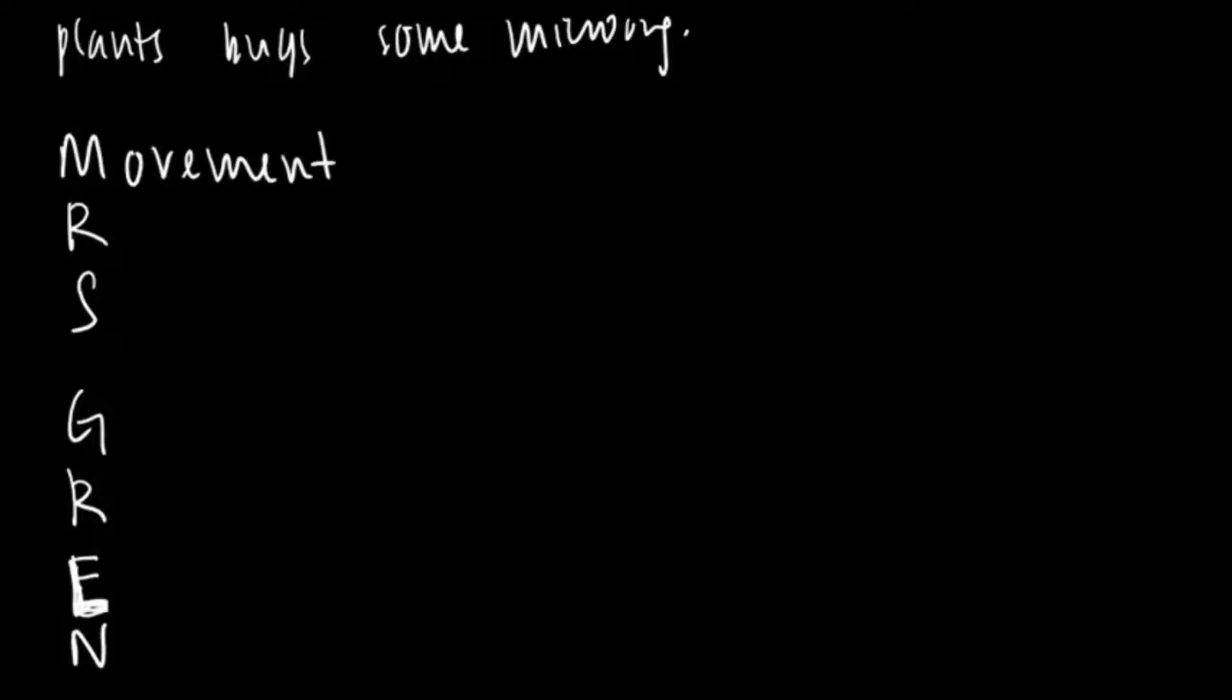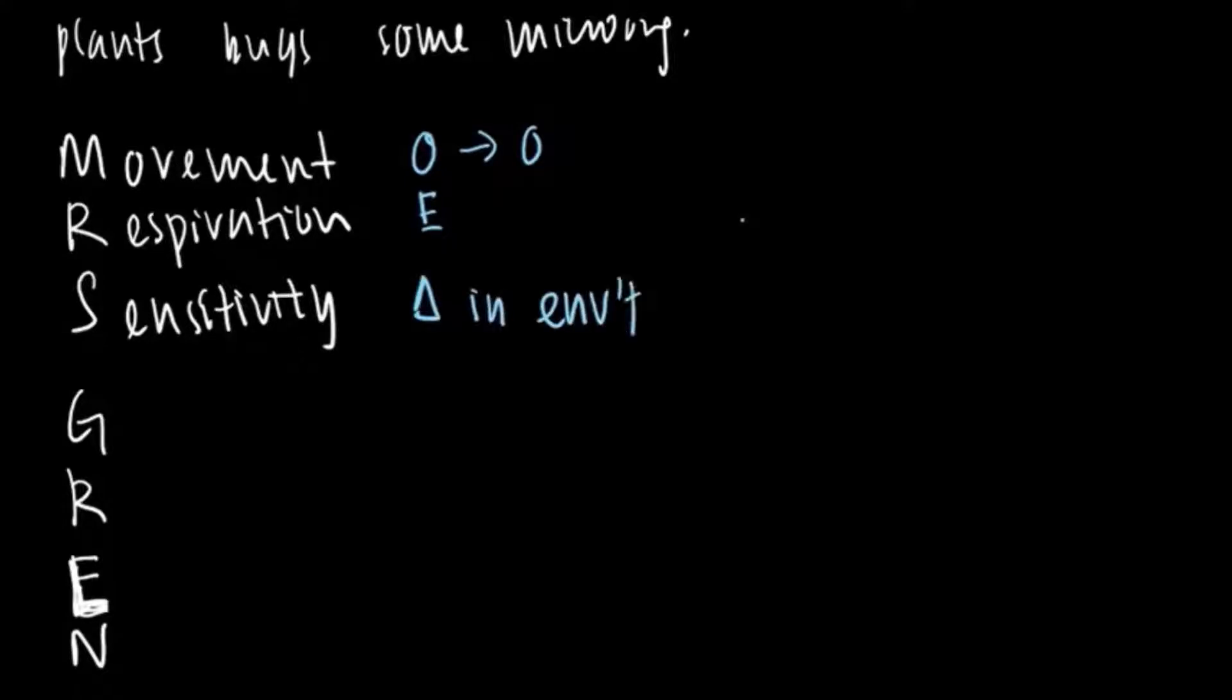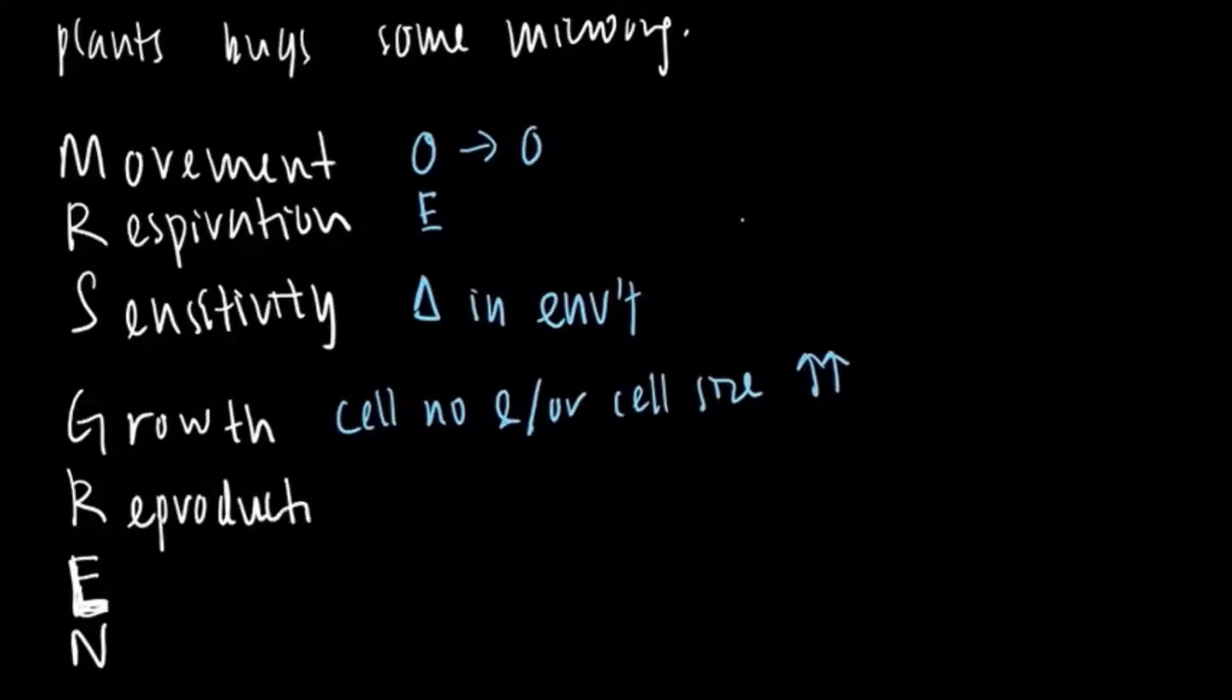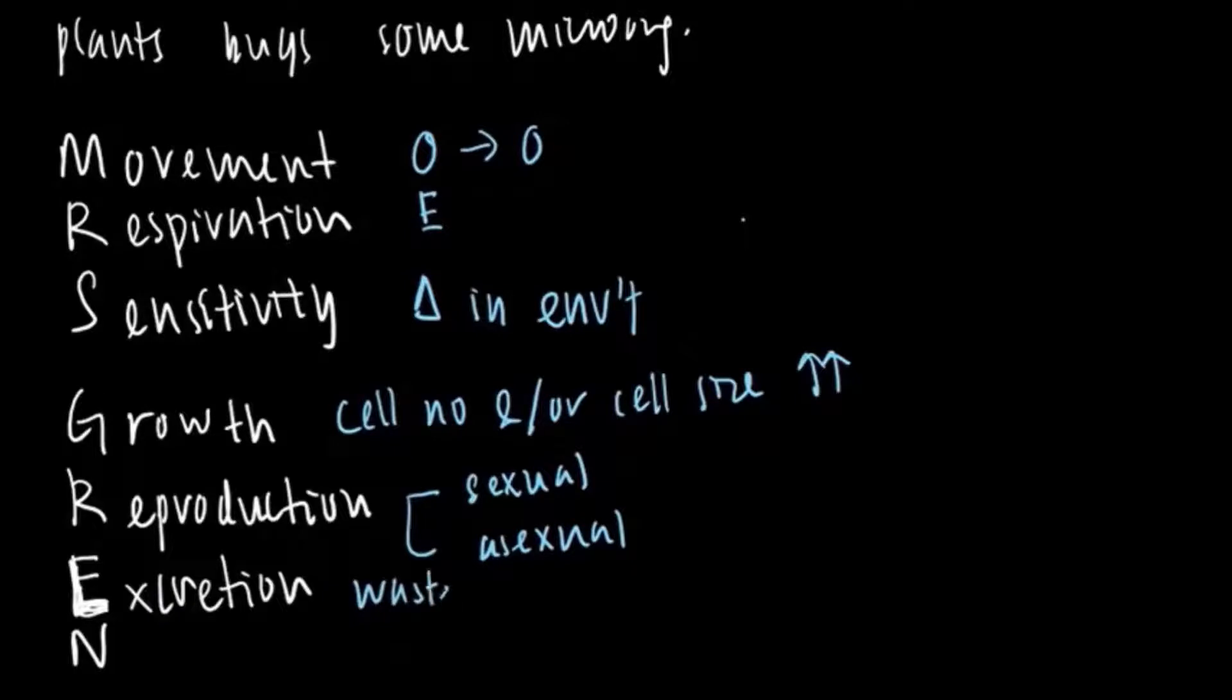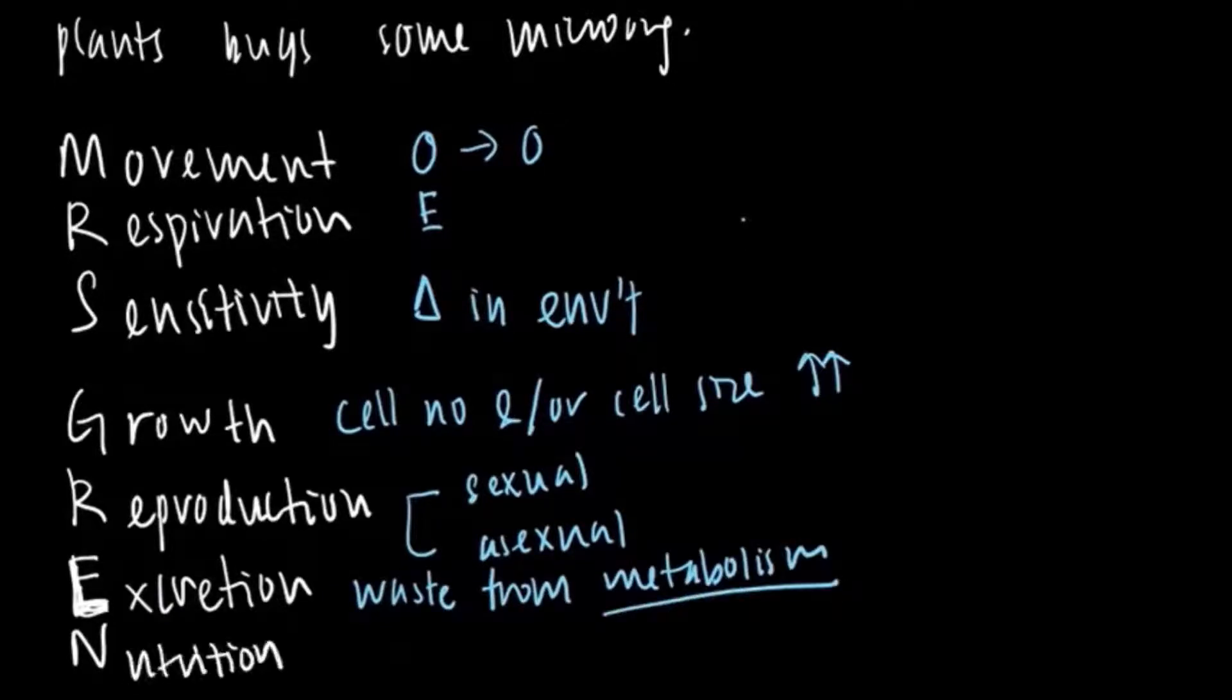We move to change location. Respire to break down nutrients and release energy for metabolism. We are sensitive, so we could detect and respond to changes in the internal or external environment. Growth, as in our cell size and cell number increase permanently. Reproduce, sexually or asexually. Excretion to remove the waste product of metabolism. And nutrition to obtain food for energy and substances for cell growth and cell repair.